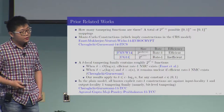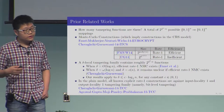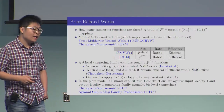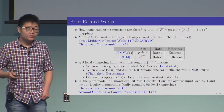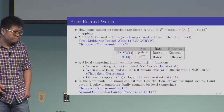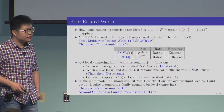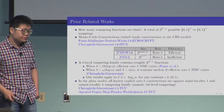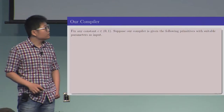Before our work, in the plain model, all known explicit rate 1 constructions are actually against functions that have input locality 1 and output locality 1. Such tampering families are referred to as bit-level tampering in the literature.